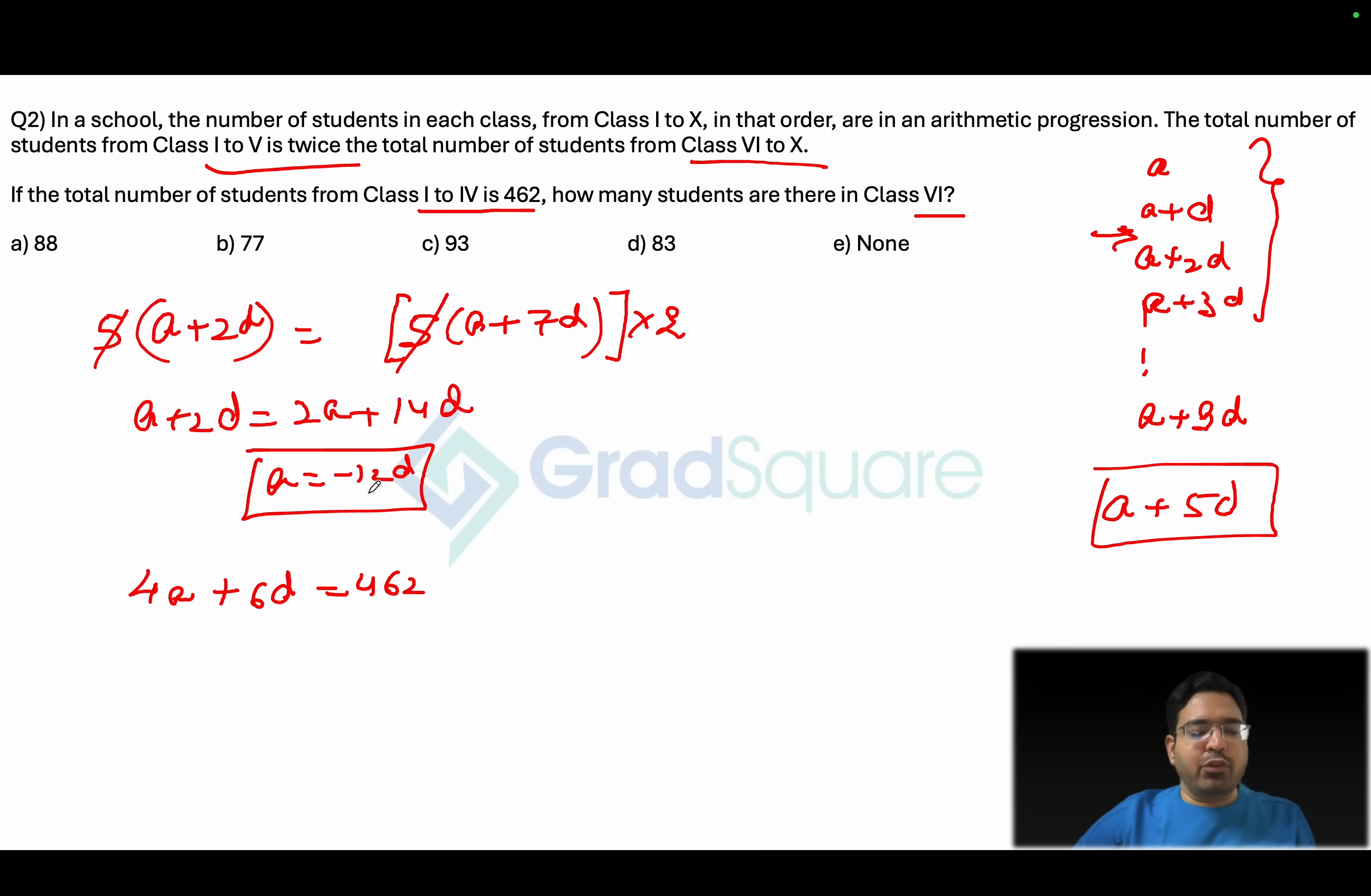Now if you look at this you can simply replace the value of a over here as minus 12d. Minus 12d into 4 will turn out to be minus 48d. Minus 48d plus 6d will turn out to be minus 42d which is equals to 462.